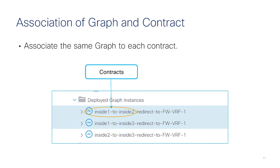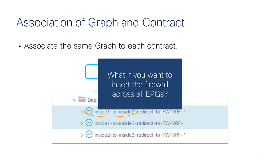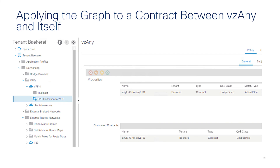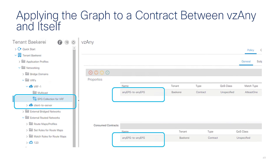You just need to take the graph and apply it to the contract subjects where you want the firewall inserted. If you apply the graph to a contract called inside-one to inside-two, a new graph instance shows up in the deployed graph instances. Apply it to another contract called inside-one to inside-three, and another graph instance appears. You could also make this graph apply to all EPGs all the time by applying the graph to the contract between the vzAny — specifying in vzAny that it is providing and consuming the very same contract, then applying the graph to that contract.